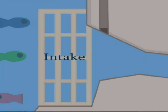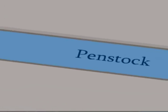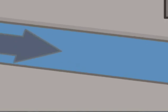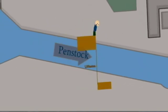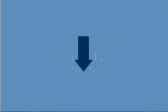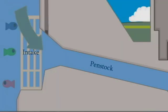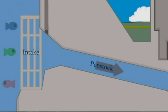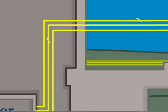The water flows through the intake, which is the gate-like structure that helps control the flow of water. The water then begins to flow through the penstock. Depending on the amount of drop and elevation will determine how much power will be produced. Gravity pours the water down, resulting in the water flowing faster through the penstock, which allows more water to go through the intake and produce more power.